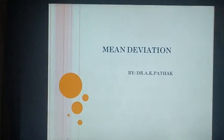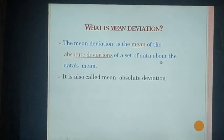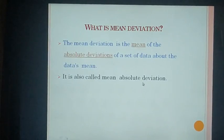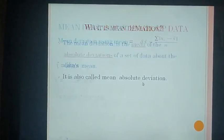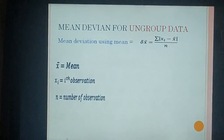Today we will start mean deviation. What is mean deviation? The mean deviation is the mean of the absolute deviations of a set of data about the data's mean. It is also called the mean absolute deviation. Mean deviation for ungrouped data can be found using two methods: mean deviation using mean, and mean deviation using median.